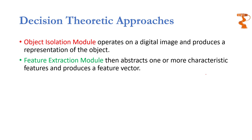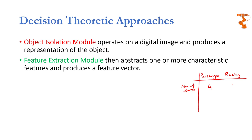For example, suppose we want to distinguish two types of cars: a normal passenger car and a racing car. We need to figure out the features of each. The feature extraction module will extract those features from the provided images. The first feature we can use is the number of doors — mostly passenger cars have four doors whereas racing cars have two. Working with only one feature is not a very good idea, so we need more than one feature.